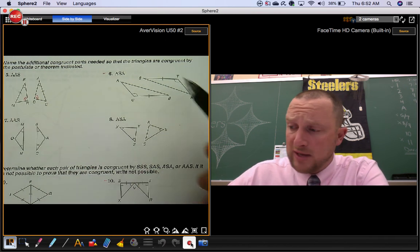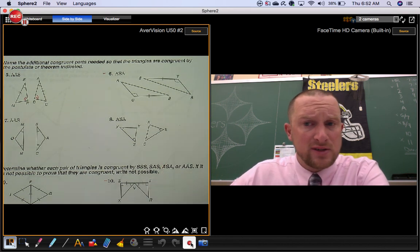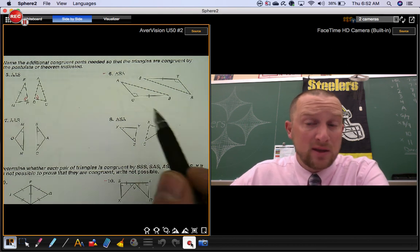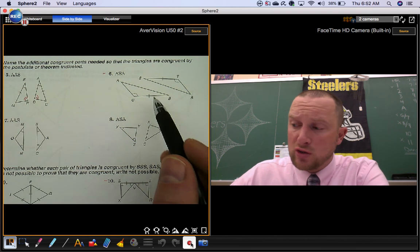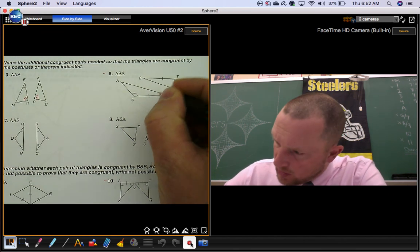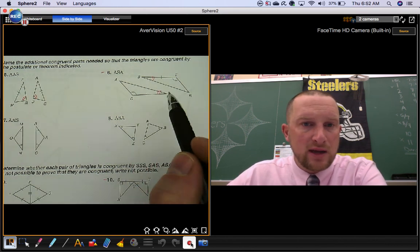Number six, once you use angle side angle, and we can't do that because we only have one pair of congruent angles, one pair of congruent sides. But if we had a second pair of congruent angles, we could make them congruent by angle side angle. Just make sure your congruent sides end up being included. So make sure your congruent angles go in these spots. That way you have angle side angle in both of them.